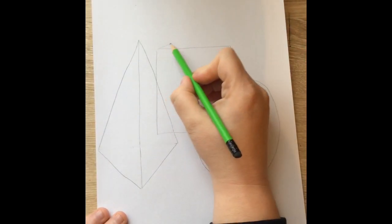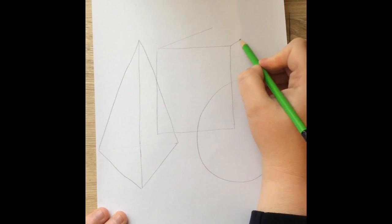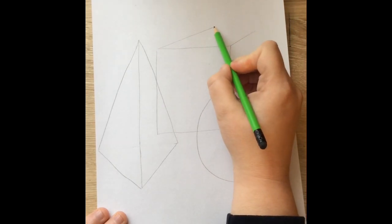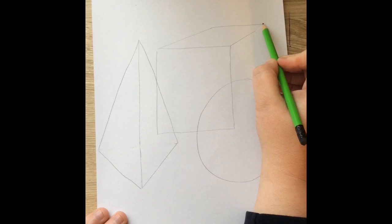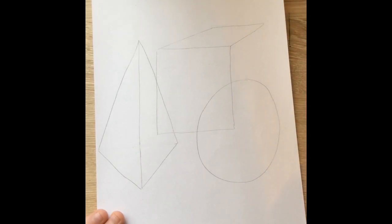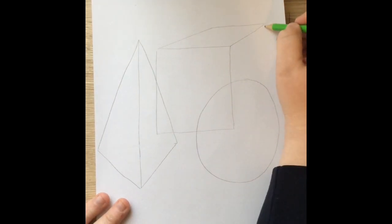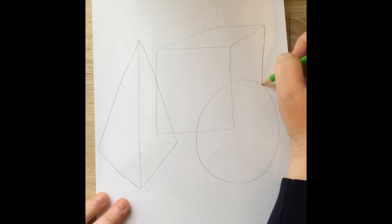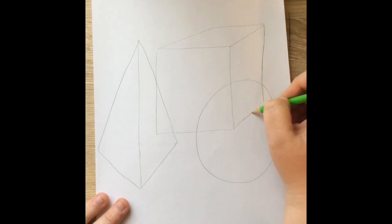Now we're going to move on to the cube, which is our square in the back. We're going to start with two lines out from the top points to go back, and then another line that connects them at the furthest point in the back.